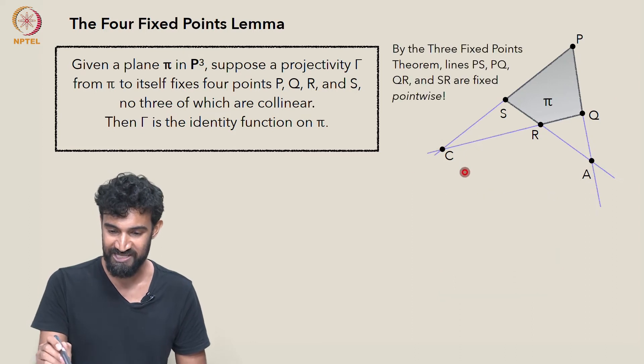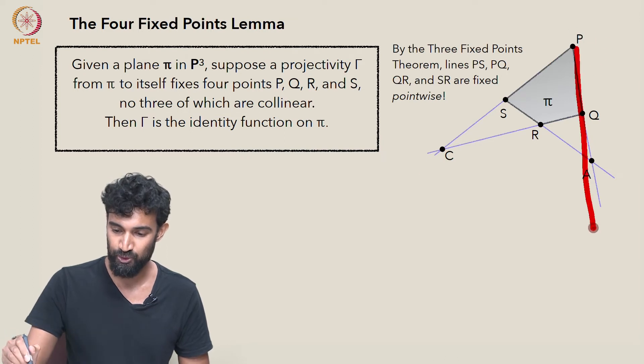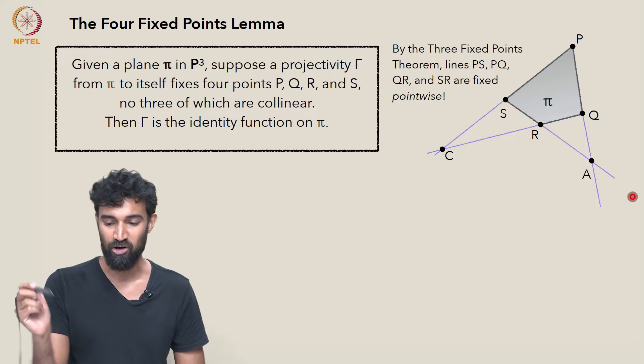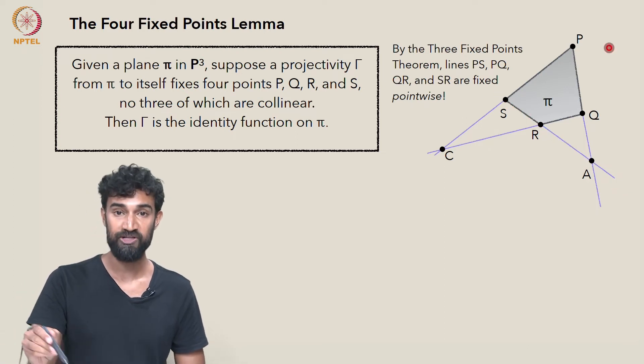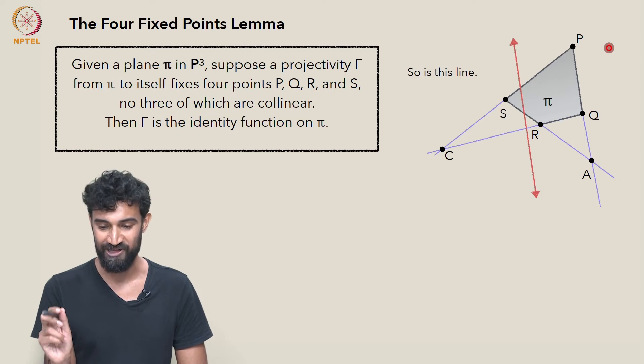So γ of C is equal to C, and by the three fixed points theorem, the lines PS, PQ, QR, and SR are all fixed point-wise. Each and every point on those lines is fixed. So γ is fixing a whole lot of points.